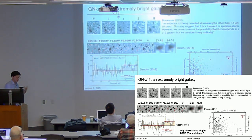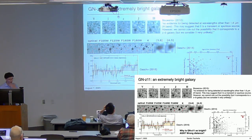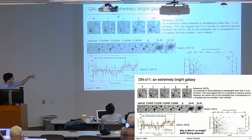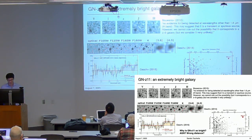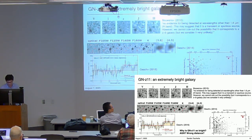Let's zoom in on the physics of a single galaxy: GNZ-11. This galaxy has been around since 2010, when it was discovered in NICMOS data. It was so unusually bright and only detected in the H-band that Richard Bouwens at the time said it could be a high-redshift galaxy candidate but considered it highly unlikely.